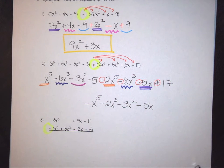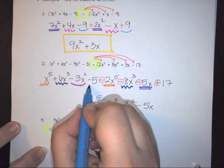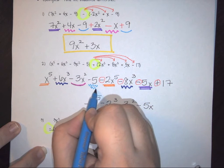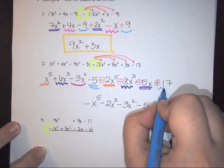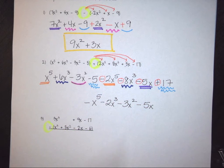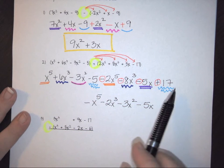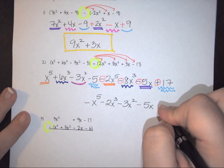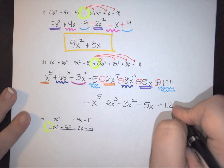And then the very last thing that I have here is I have this constant term. And I've got another one. So I need to combine those together. So here I have a negative 5 plus 17 gives me a positive 12 as a result.